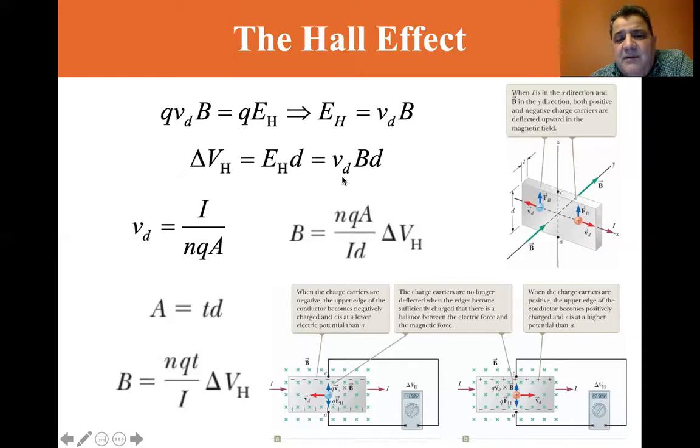You have the nqA here times d that comes to the denominator when we put it up the other side with the delta V. So the magnetic field is the number of charge carriers times the charge times the area times the current times this distance times delta V_H.